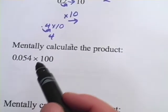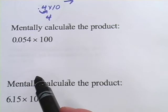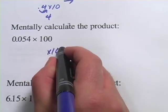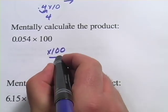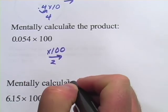Let's take a look at another one. It says mentally calculate the product. Now, when you multiply by 100, you're moving the decimal place 2 in that direction.